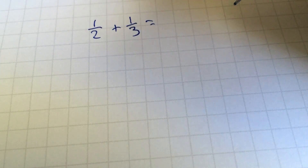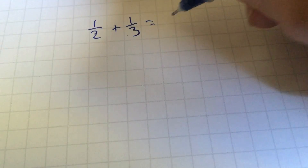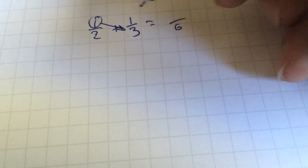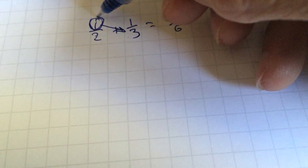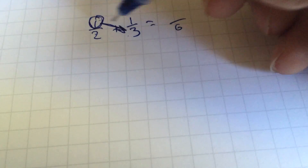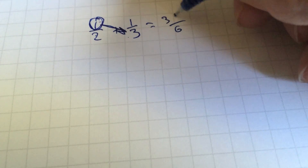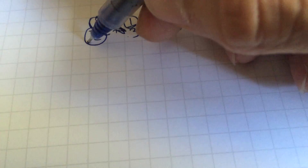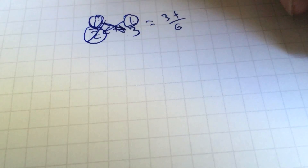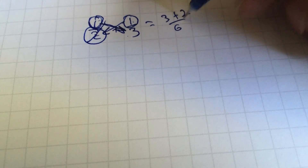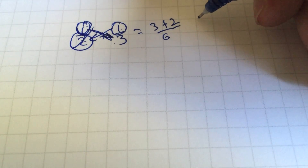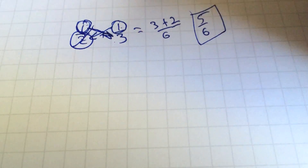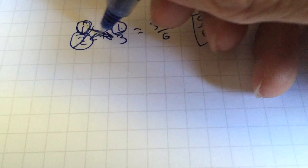We need a common denominator, and you get that by multiplying straight across, so that's six. Then you multiply: one times three is going to be three, plus one times two is going to be two. So you're going to get five over six, and that is your answer. Let me see if I can explain this a slightly less complicated way.